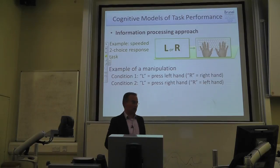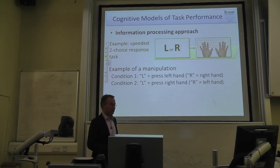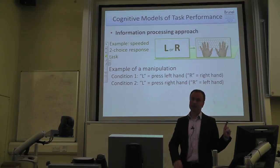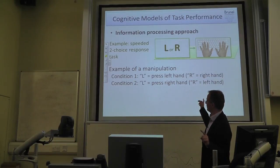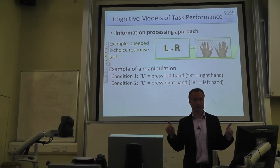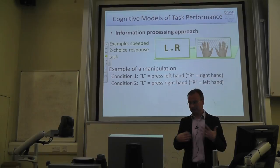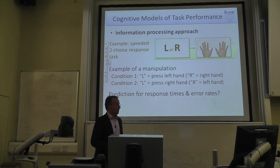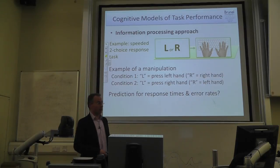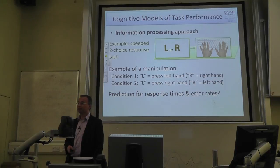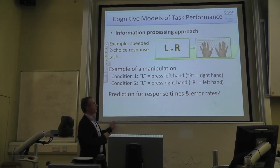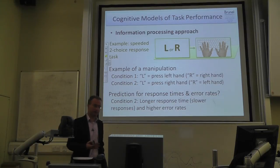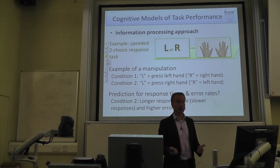A basic experimental manipulation: in one condition, L means press left and R means press right. In another condition, L means press right and R means press left — a counterintuitive mapping, a little bit more difficult. What would you predict? Probably you will be slower and make more errors in the counterintuitive condition because it's harder to memorize. Such a difference might go away if you train long enough.